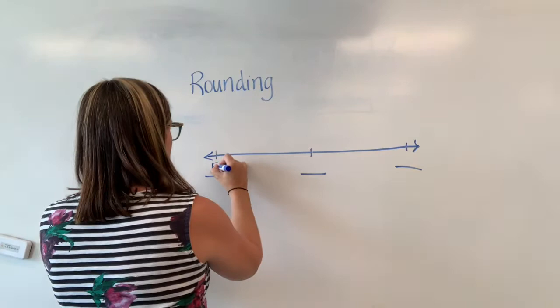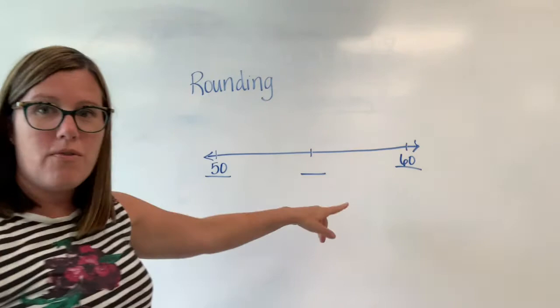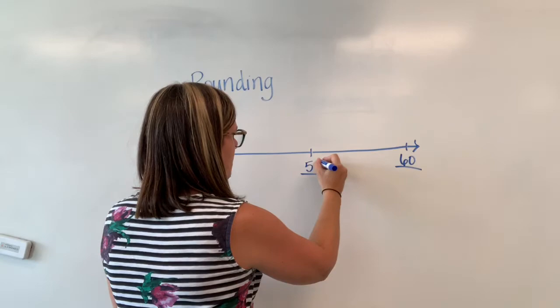Okay so I would think about the numbers that are around 53 and so I know that it's going to fall between 50 and 60. Then I could put my number that falls in the middle. That would be 55.